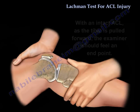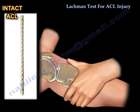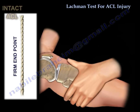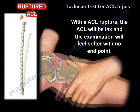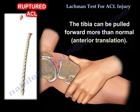With an intact ACL, as the tibia is pulled forward, the examiner should feel a firm end point. With an ACL rupture, the ACL will be lax and the examination will feel softer with no end point. The tibia can be pulled forward more than normal — this is the anterior translation of the tibia.